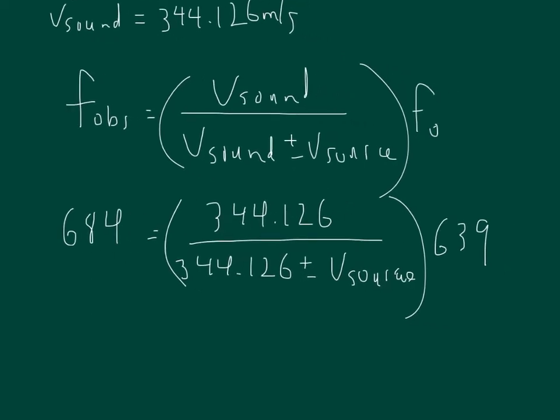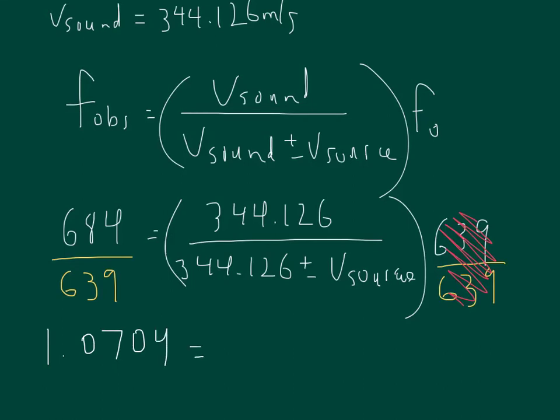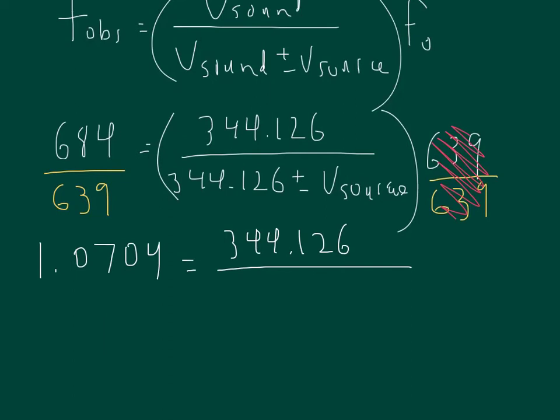What we're trying to do is solve for this bit right here. So what I'm going to do as a first step is just divide both sides by 639 to get rid of the number on that one side. If we do that, 639 over 639 cancels out, and on the left hand side 684 divided by 639 is 1.0704. Now we have 344.126 over 344.126 plus or minus the speed of the source.